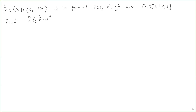We have this surface integral of a vector field that we want to compute. This is the vector field, and the surface is the part of the downward facing paraboloid z equals 6 minus x squared minus y squared over the square where x goes from 0 to 1 and y goes from 0 to 1. We want to find the integral of this vector field over the surface — this is also called the flux of the vector field over the surface.